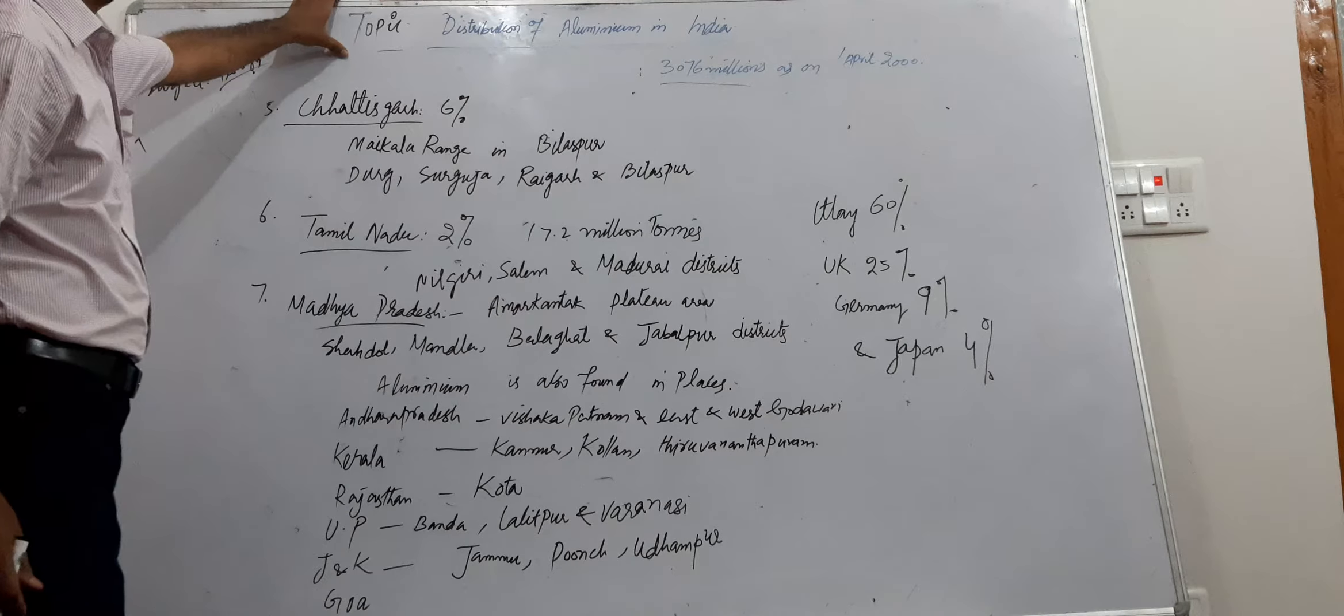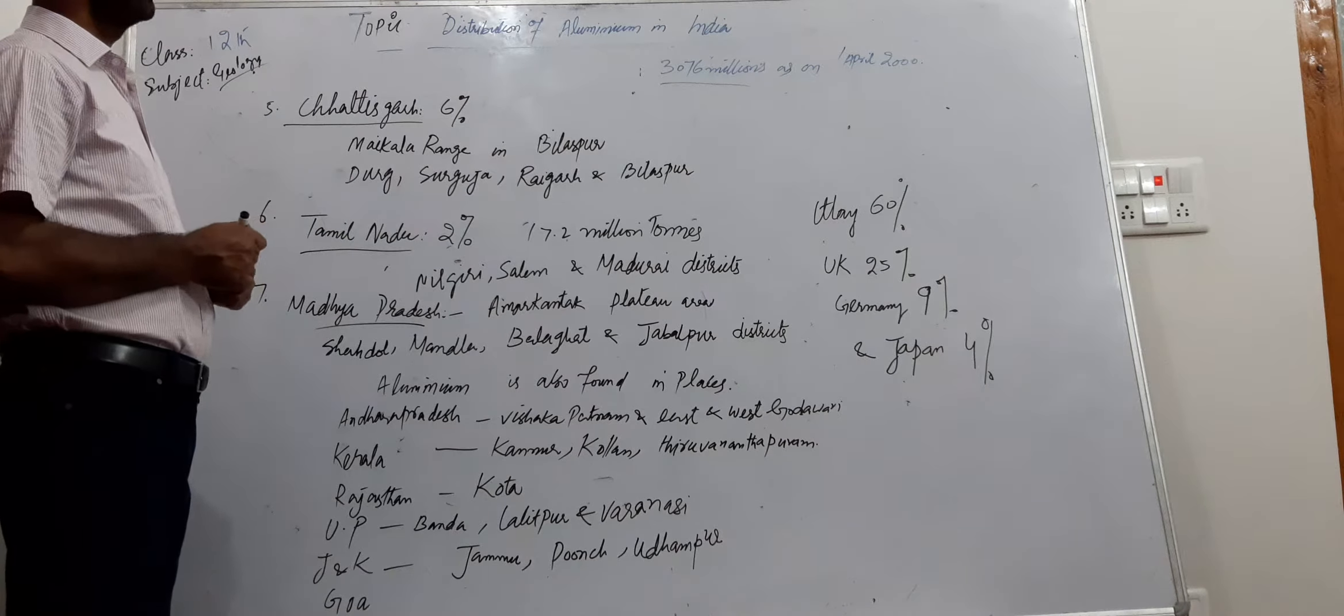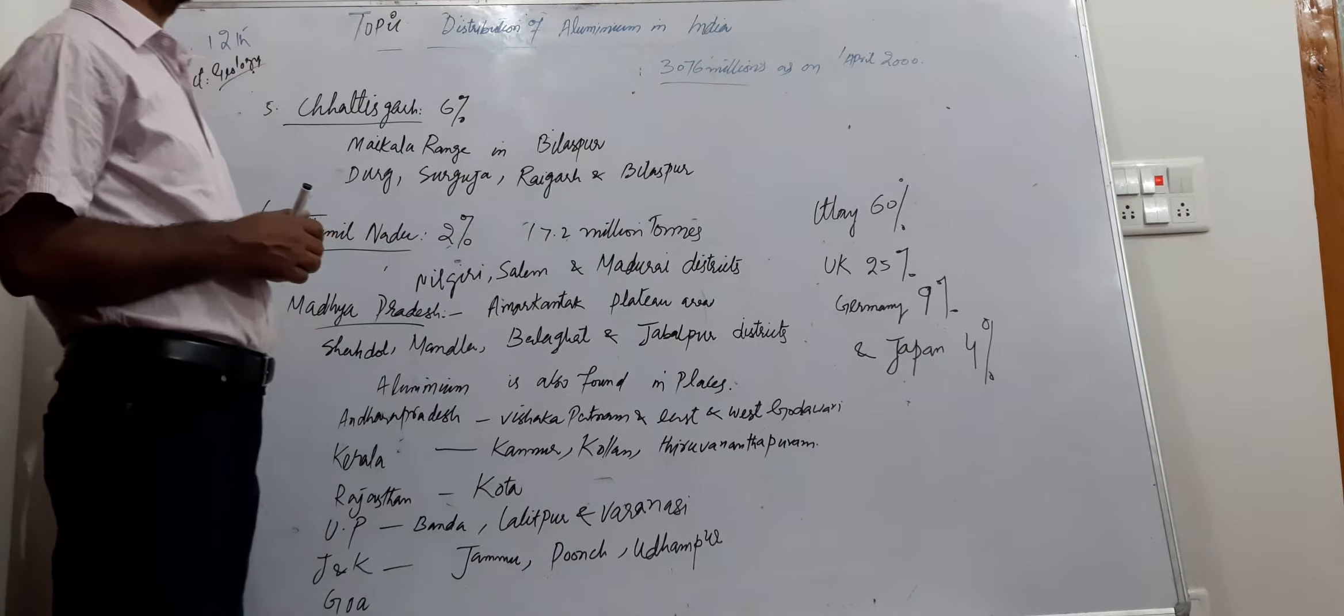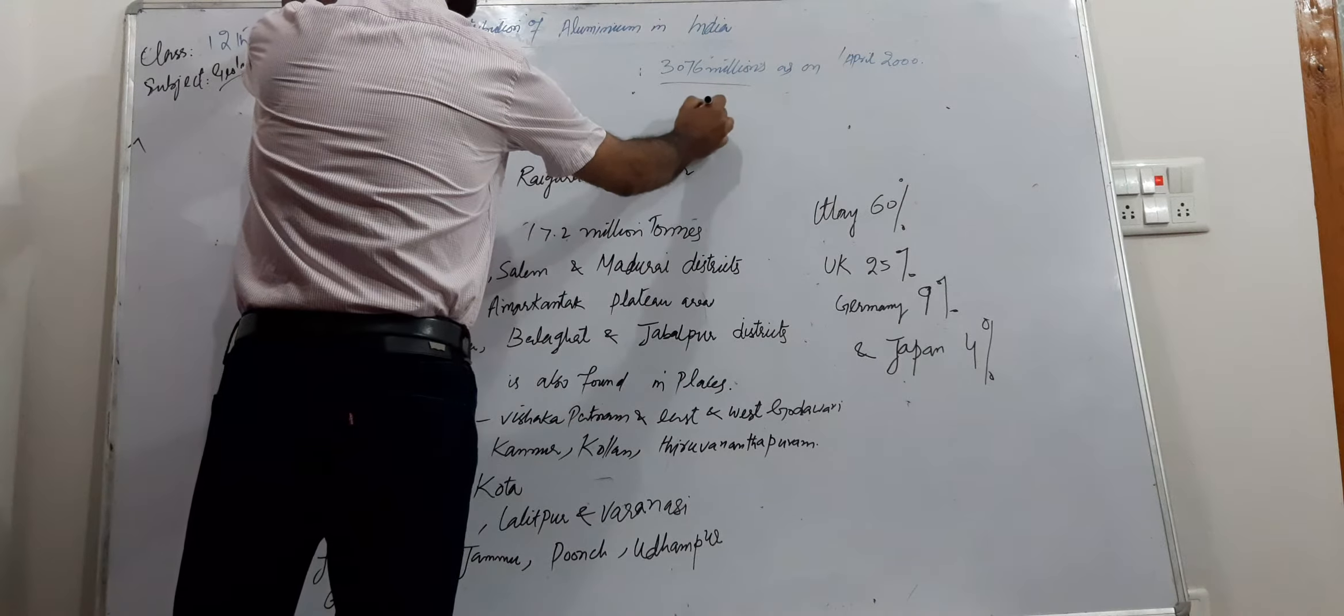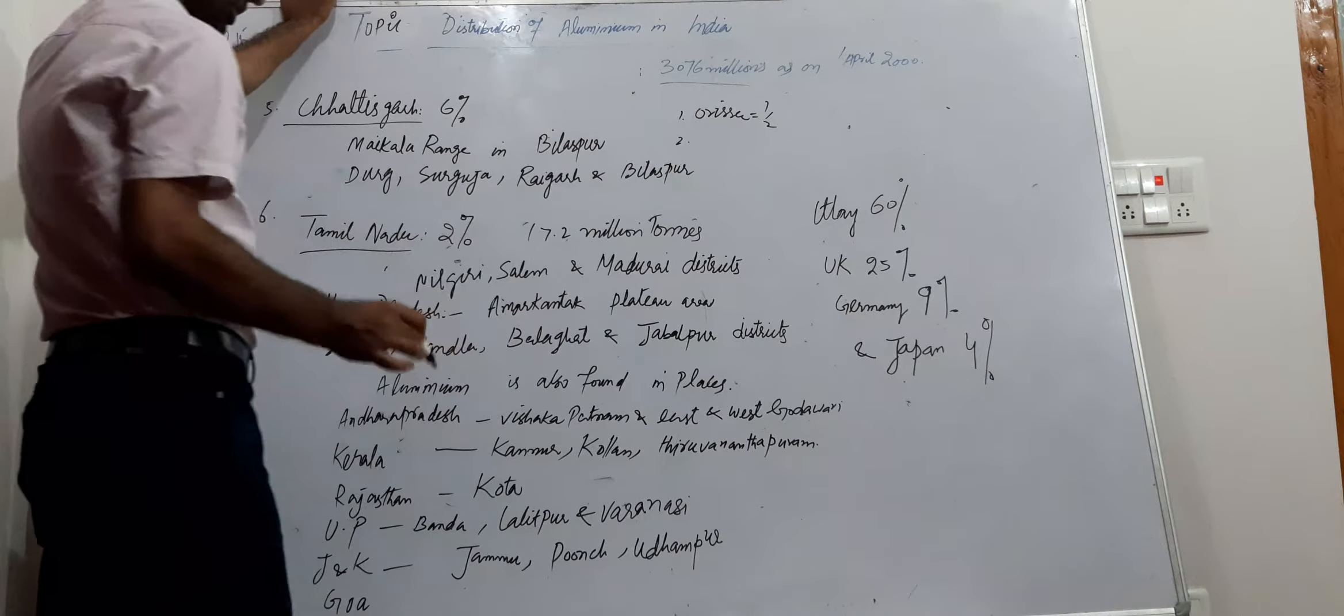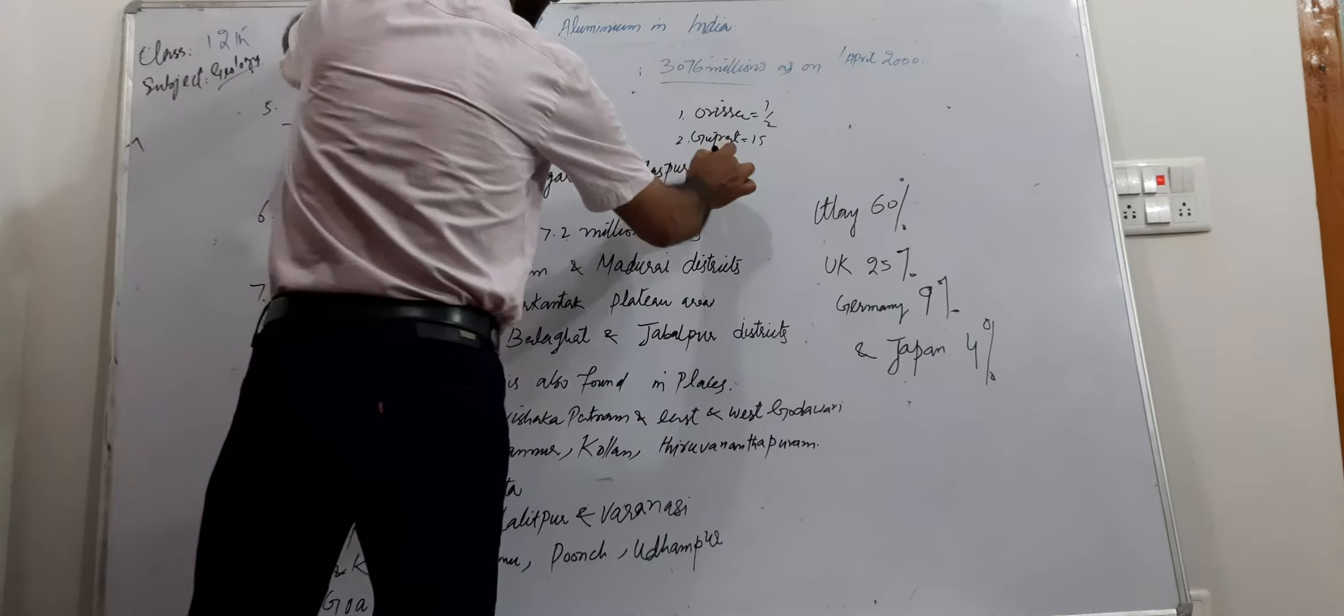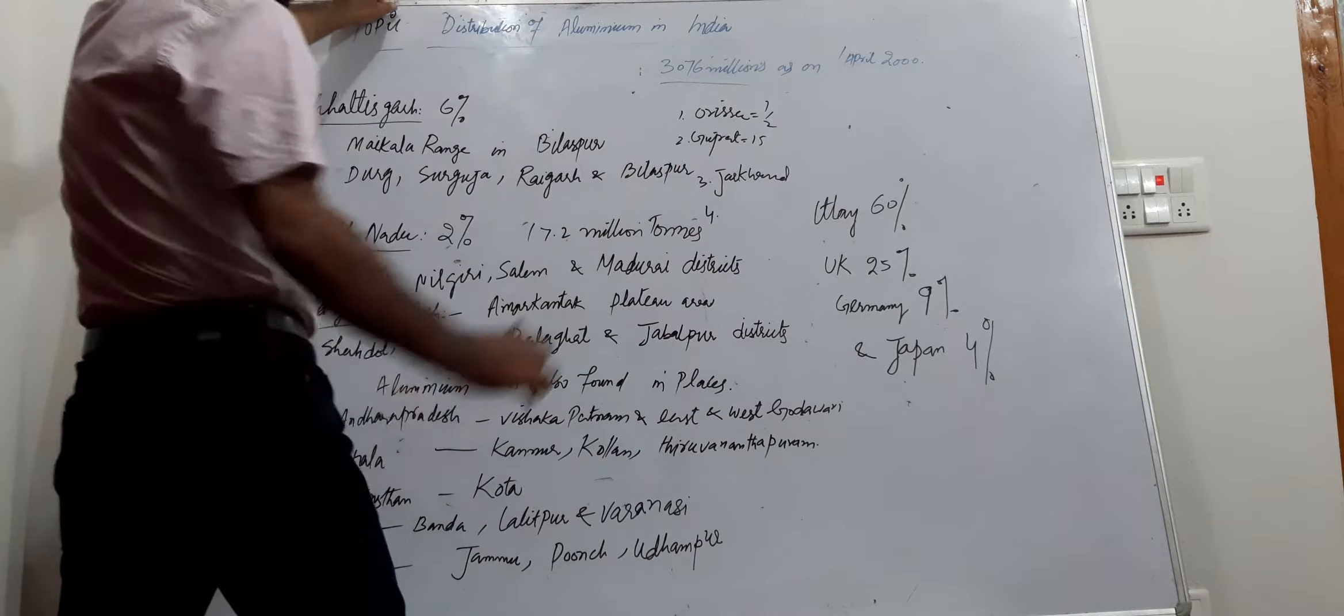In the previous class we left some states which contribute bauxite ore from which we extract aluminum. These are present in different states. In the topic distribution of aluminum in India, we discussed number one is Odisha which contributes half of the total production, then Gujarat which contributes 15 percent, and after that Jharkhand and then at fourth place Maharashtra.